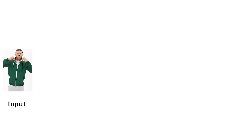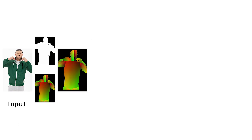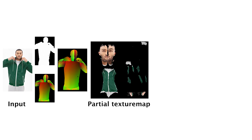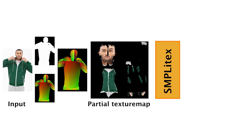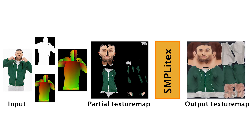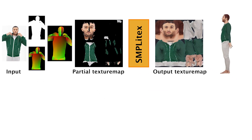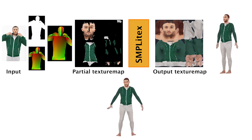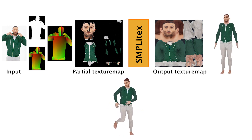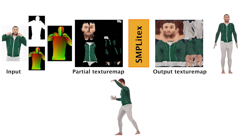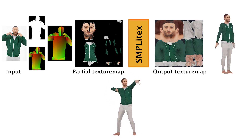From a single RGB image, we predict a tight pixel-to-surface mapping, which is used to compute a partial texture map of the subject. We then use our generative model, SimpliText, to generate a full texture map of the subject. SimpliText texture maps are ready to be applied to the SMPL body model, enabling the reanimation of the input subject in traditional animation pipelines.